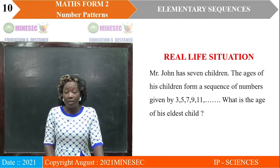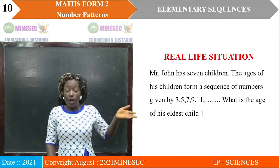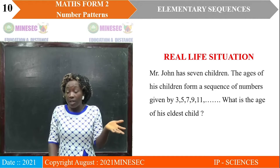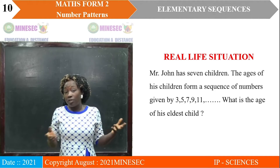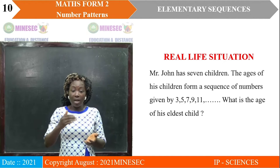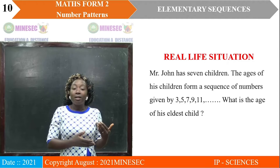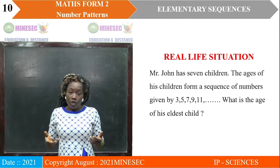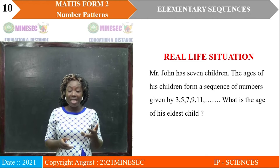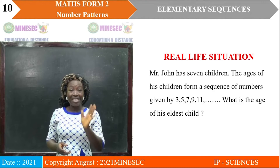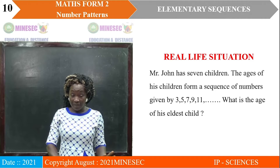What is the age of his eldest child? Mr. John is a father in a village where a census is going on. He only knows his last child is 3 years old, and that the spacing between his children is 2 years each. The agent used this to determine the other ages, successfully coming out with the sequence 3, 5, 7, 9, 11. But we are told Mr. John has seven children, so what is the age of his eldest child? As the lesson goes on, you will know what to do.